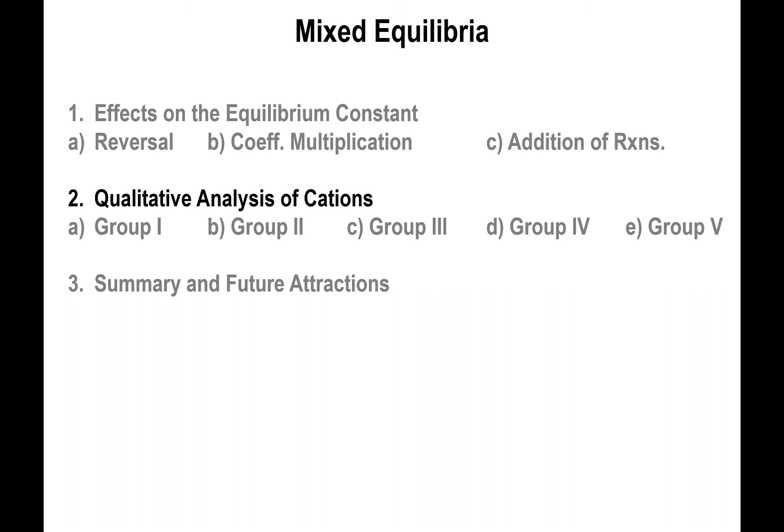Okay, so we're going to talk about the cations group 1, 2, 3, 4, and 5 and explain what this means. This ultimately has to do with something known as qualitative analysis, which allows you to, without actually computing numbers, determine which metals may be present in a mixture, a solution mixture that you may be provided with.